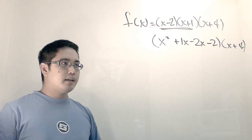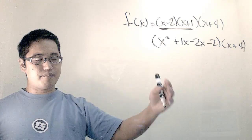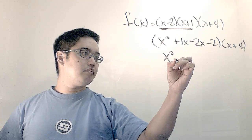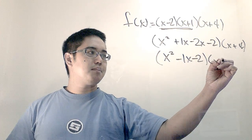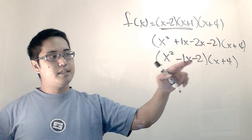Now, I'm going to combine these like terms in the middle just to simplify this first parentheses up a little bit. So, I have x squared minus 1x minus 2 times x plus 4. Now, I have to foil this thing right here.